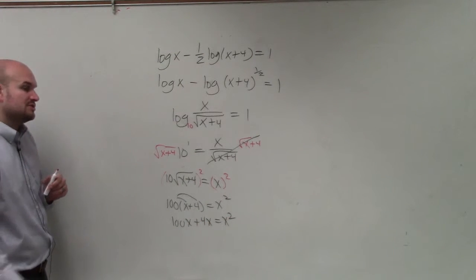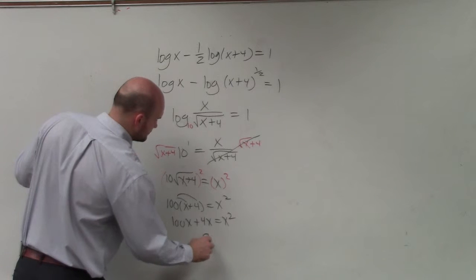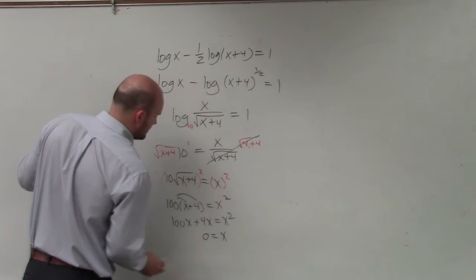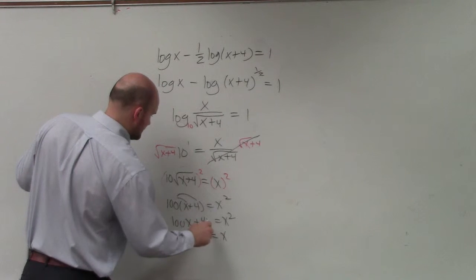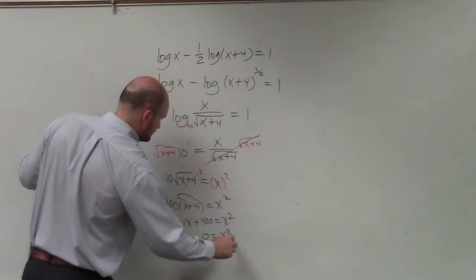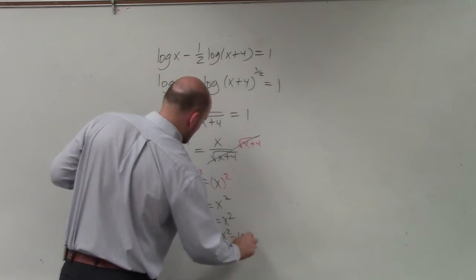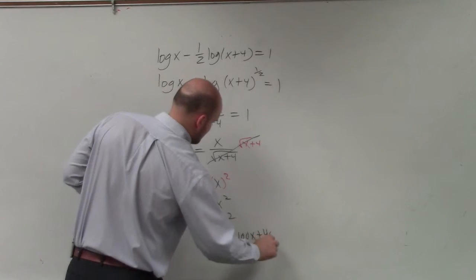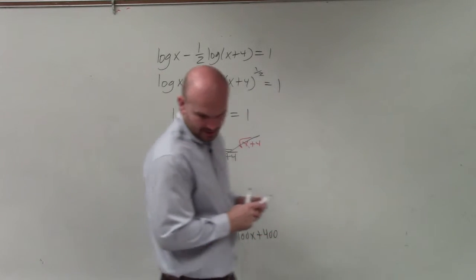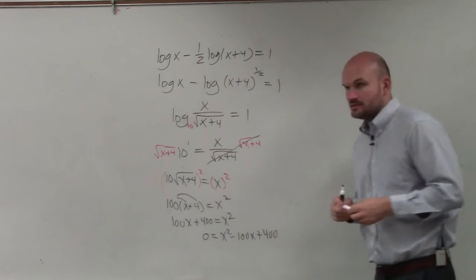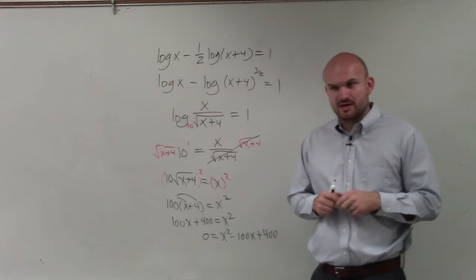Now I see that this is a quadratic, so I'd set it equal to 0. 400, thank you. Does everybody see why I set it equal to 0? Because it's a quadratic, right?